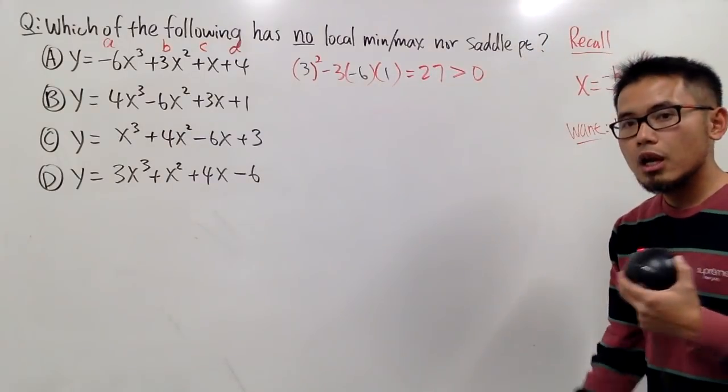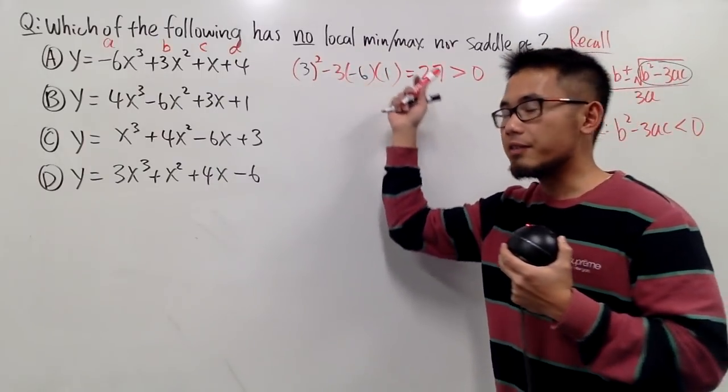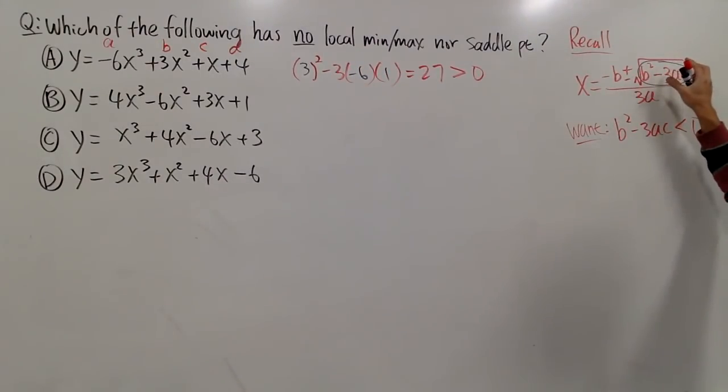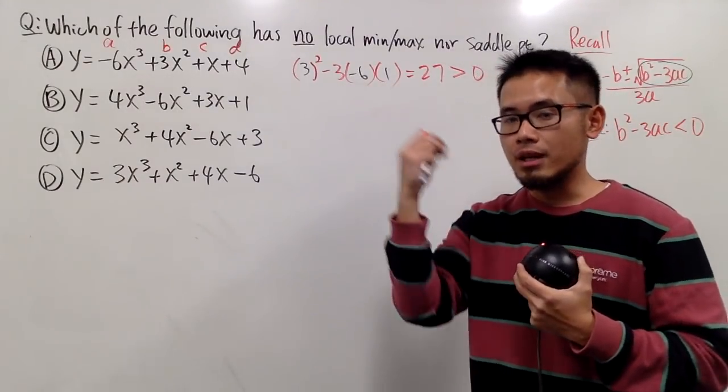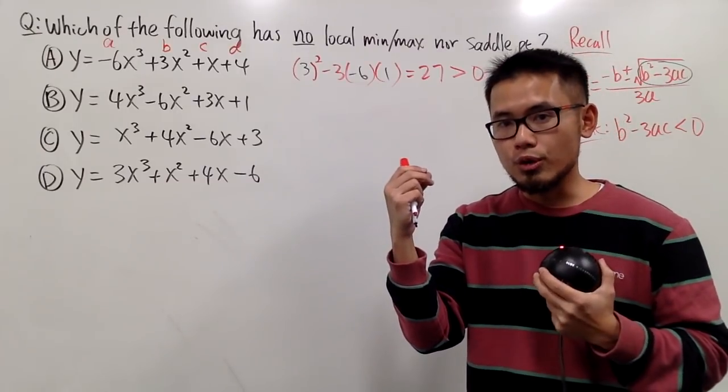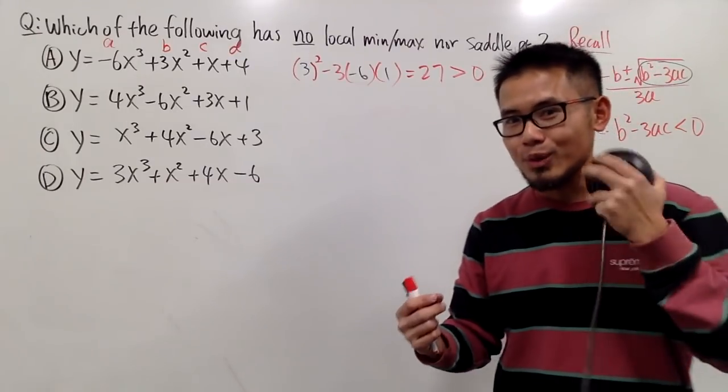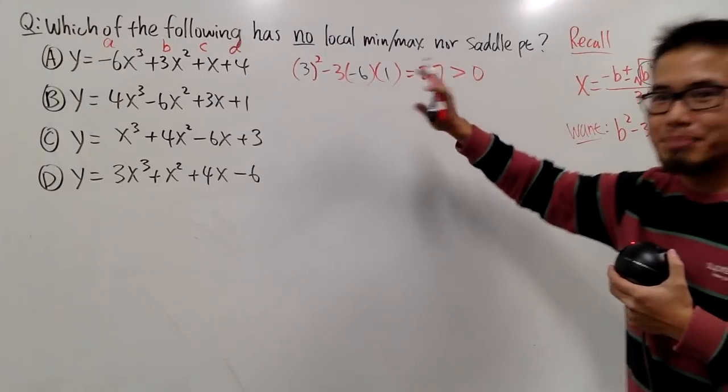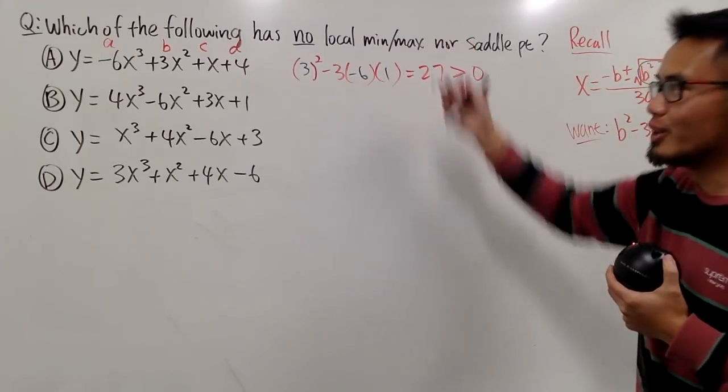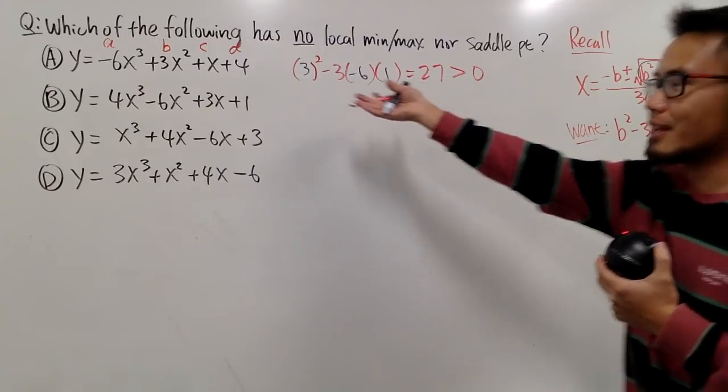It's positive. When you have the positive value for the discriminant, that means you end up with a plus minus version. That means you have two vertexes. That means you have one local minimum and one local maximum. This is not the answer to our question because it does have something interesting.